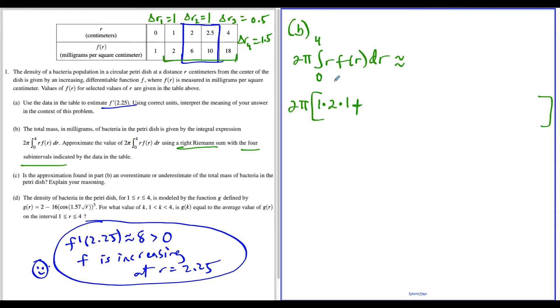Now we have plus the next radius, which is 2. f of 2, the density when we're 2 centimeters from the center, is 6. So we have 2 times 6 times delta r, which equals 1.